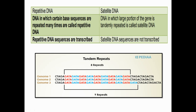We need to understand what repetitive DNA and satellite DNA are. Repetitive DNA has sequences repeated many times, and this repetitive DNA sequence is transcribed to form a particular kind of protein. However, satellite DNA consists of tandemly repeated DNA — sequences repeated at regular intervals with a bigger sequence — and it is not transcribed at all.